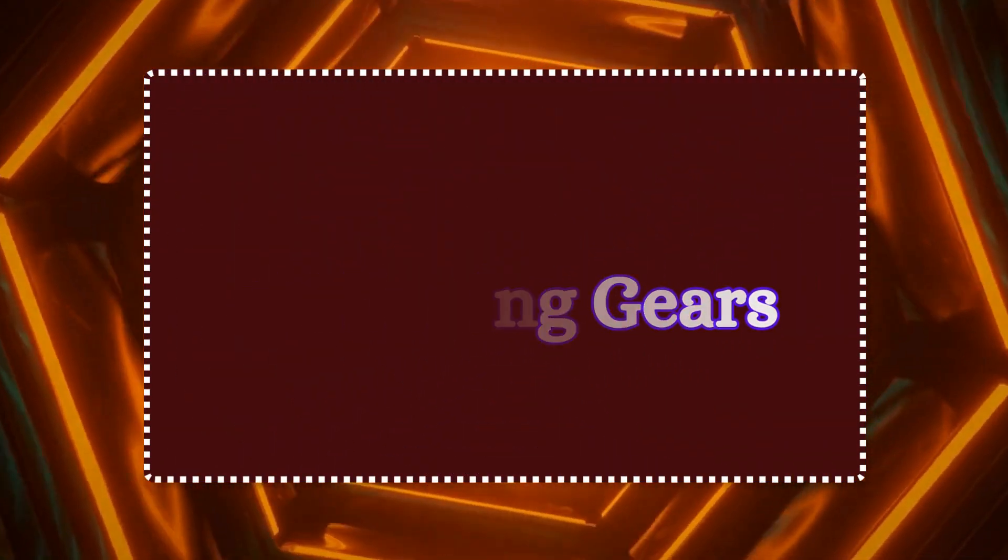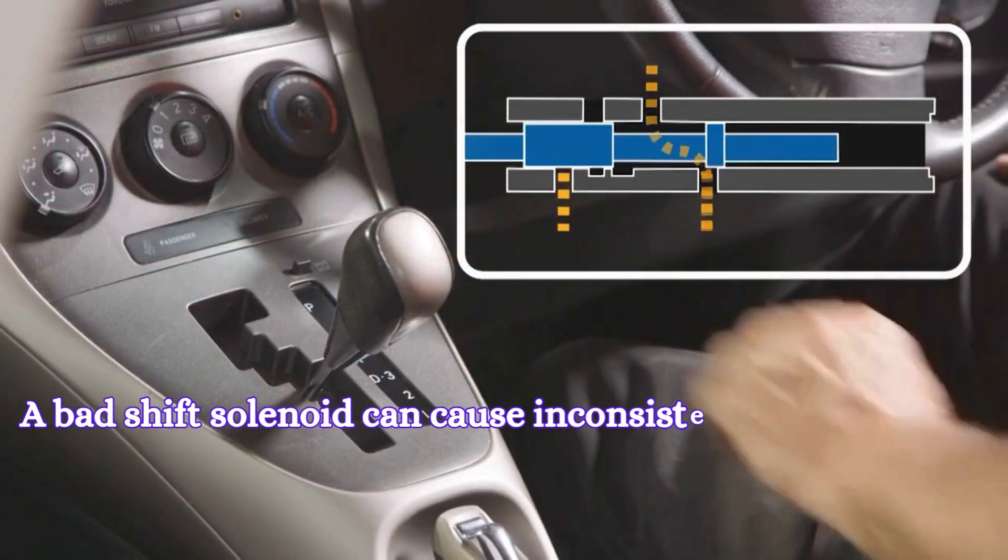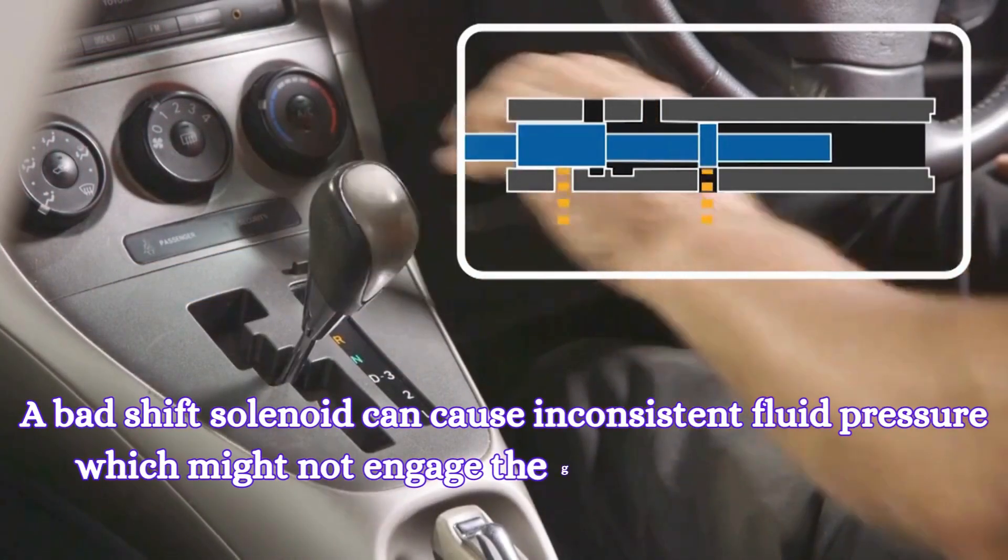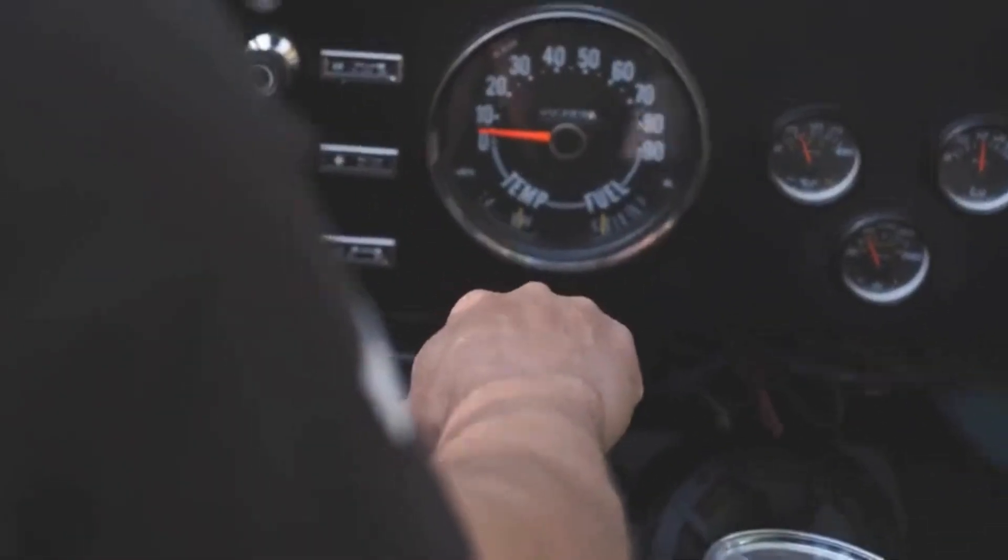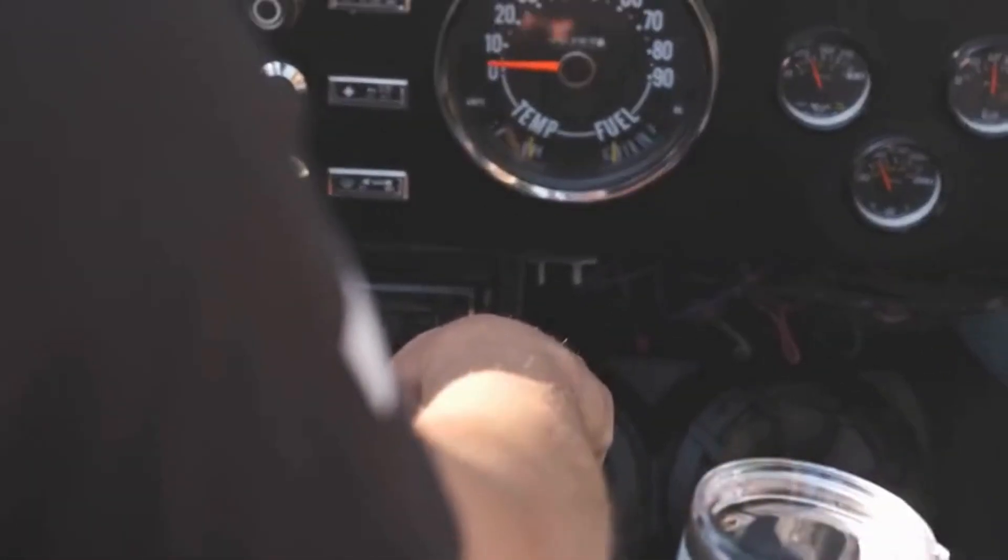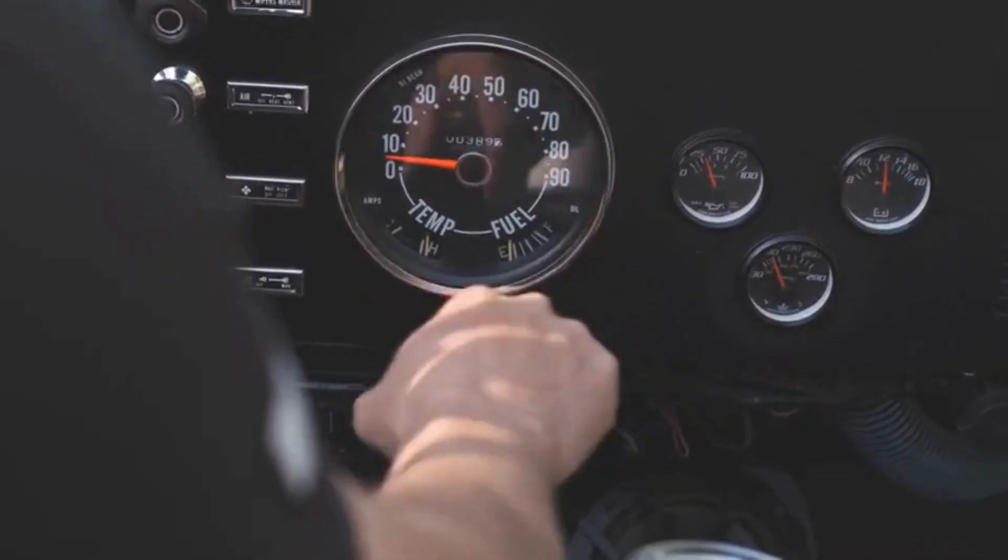Four, slipping gears. A bad shift solenoid can cause inconsistent fluid pressure, which might not engage the gears fully or properly. This leads to the transmission slipping in and out of gear because it can't maintain the necessary pressure to hold the gear.